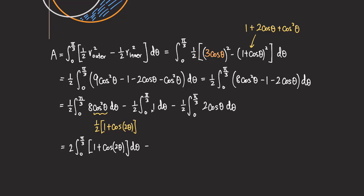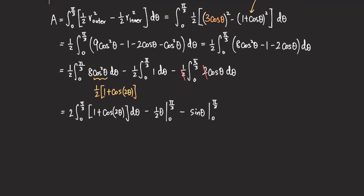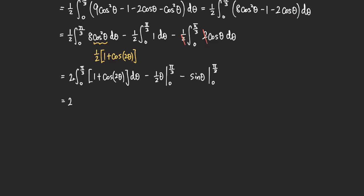We can integrate all terms directly. For the second integral, one half times the integral of 1 gives one half times theta evaluated from 0 to pi over three. For the third integral, the one half and two cancel, so we just integrate cosine, giving minus sine theta evaluated from 0 to pi over three. For the first integral, integrating (1 plus cosine 2 theta) gives theta plus one half sine 2 theta, with limits from 0 to pi over three.